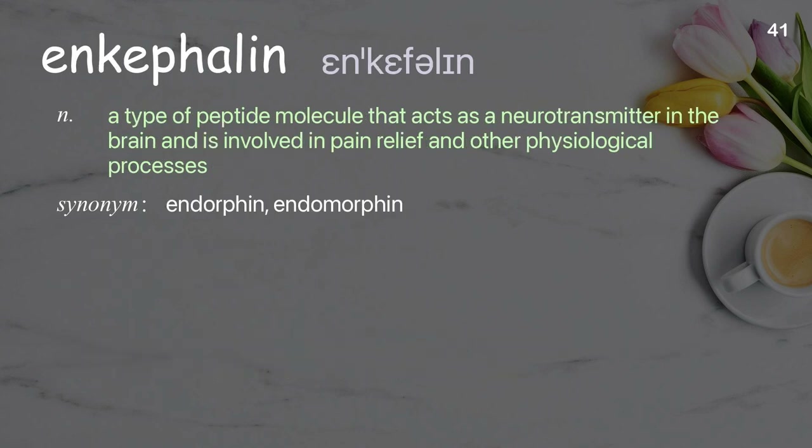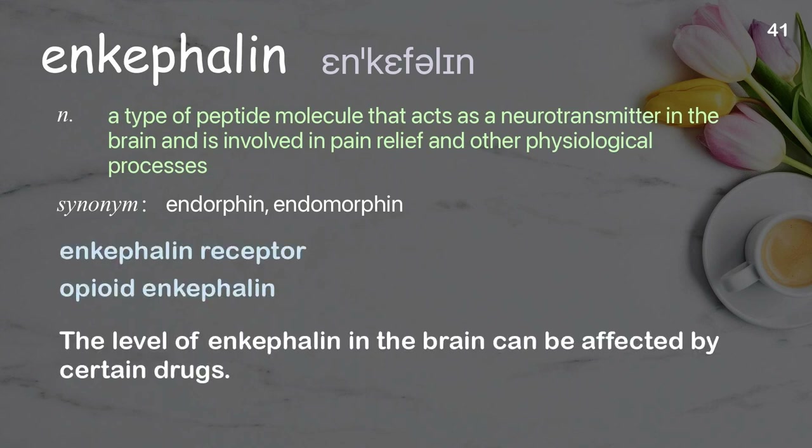Enkephalin: a type of peptide molecule that acts as a neurotransmitter in the brain and is involved in pain relief and other physiological processes. Examples: Enkephalin receptor. Opioid enkephalin. The level of enkephalin in the brain can be affected by certain drugs.